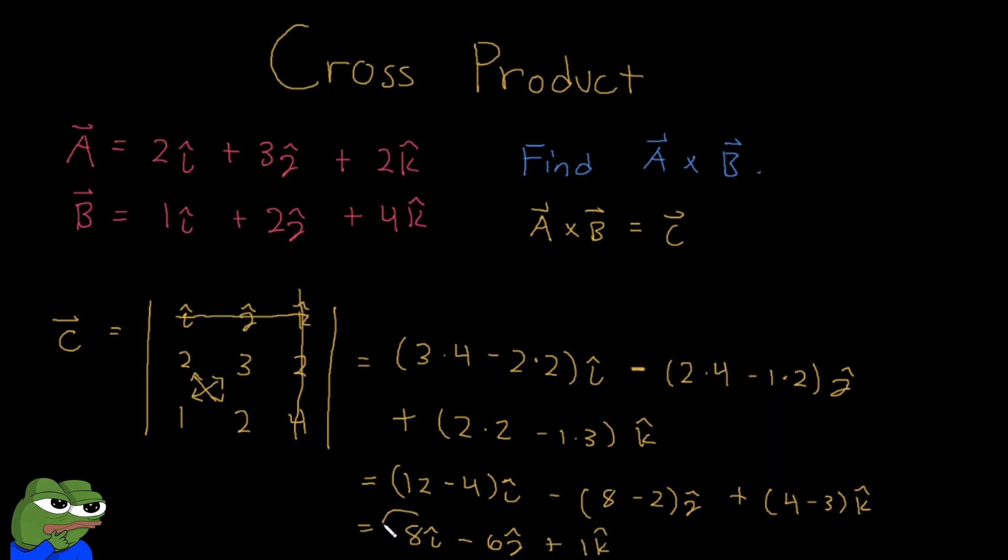And so our final answer is 8I minus 6J plus 1K. And so this is our resultant vector from doing A cross B. Hopefully now you kind of understand the cross product a little bit better and you know how to solve 3D vector cross product.